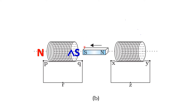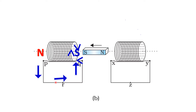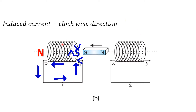So, this is the clockwise direction. We have to see how the coil is coiled up — it is moving like this. So, the direction of the current is this one; that is, induced current is this one. So, the induced current direction is PRQ or PRQP.